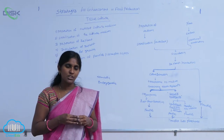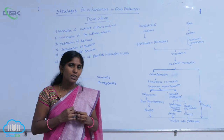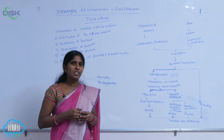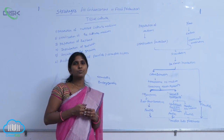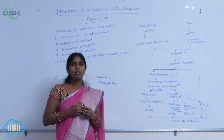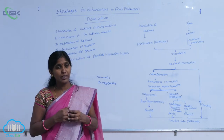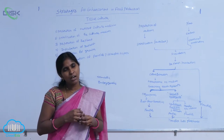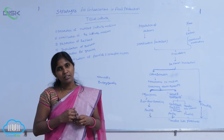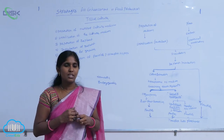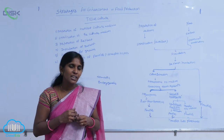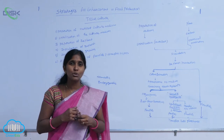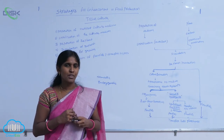Micro-propagation is economically very useful for culturing a large number of variety plants. The plants which are obtained from tissue culture through in vitro cultivation are genetically identical, and they are called soma clones.